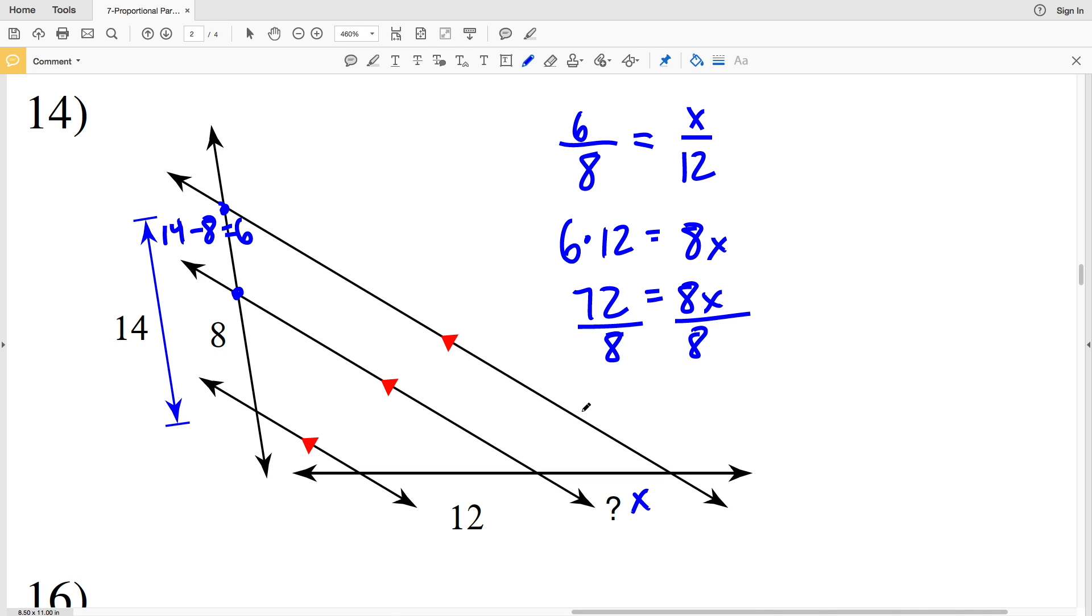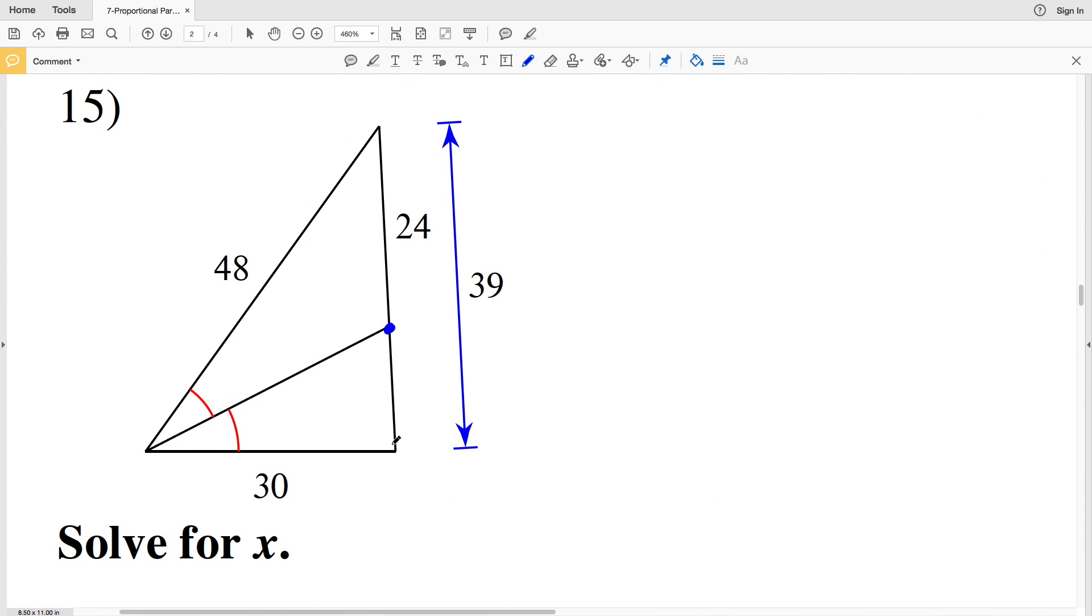6 times 12 is 72, and that's equal to 8X. And when I divide by 8, 72 divided by 8 will give me 9. So 9 is our missing length in number 14. For number 15, first I'm going to calculate this length, which is the only missing length, so that is our indicated length. And we can do this simply by subtracting, so 39, which is the total length of this side of the triangle, minus 24 will give us our indicated length.